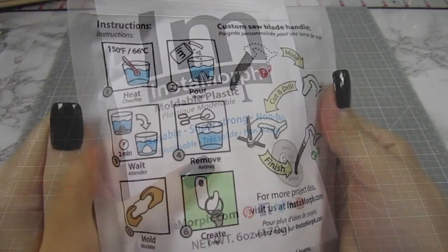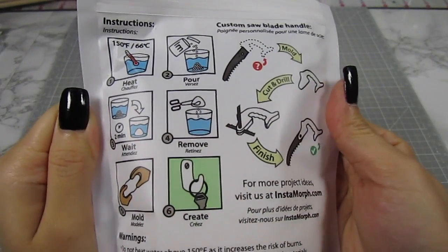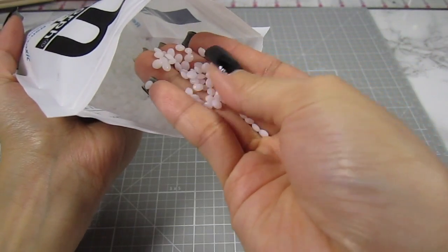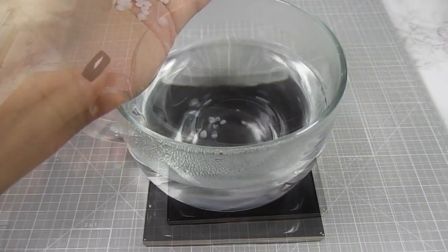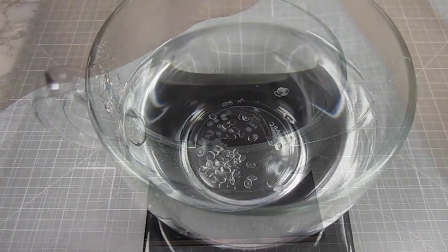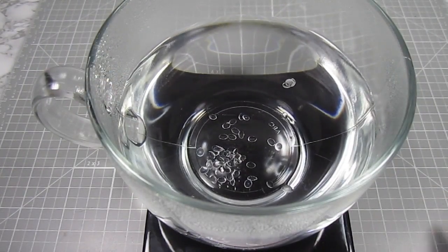This brand is Instamorph and it's basically plastic beads that melt in boiling water. Once they melt, it turns clear and forms into a clay-like substance that you can shape into whatever you like. I just pour some boiling water in a cup and throw a few beads into the water. As you can see, the white plastic turns clear as it sits in the hot water.